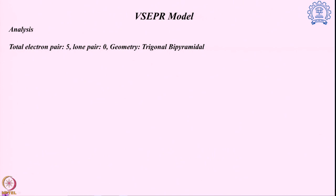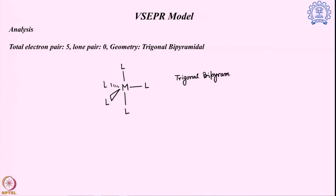Moving to a five-pair system: when all five pairs are bond pairs with no lone pairs, the preferred geometry is trigonal bipyramidal (TBP). If you have five bond pairs and no lone pairs, the molecule will directly adopt this trigonal bipyramidal geometry.